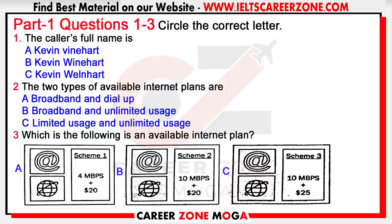Got it. So you were saying you wanted to know about our internet plans. We have two types of broadband plans: limited usage and unlimited usage. Which one would you be interested in? The unlimited usage sounds better. What is included in that and what are the charges?